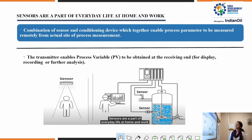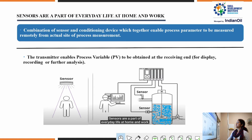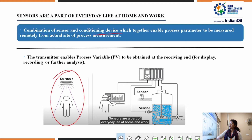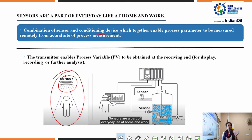This diagram shows sensors, which are generally part of everyday life at home and at work. A sensor is a combination of a sensing element and a conditioning device, which together enable process parameters to be measured remotely from the actual site of the measurement. For example, if a light is on in a room, it can be sensed by a sensor, and when you leave the room, the light can automatically switch off.